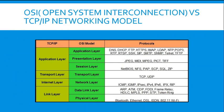OSI — Open System Interconnection — versus TCP/IP, which is Transmission Control Protocol / Internet Protocol networking model. OSI has seven layers, while TCP/IP has five or four: five for the TCP/IP reference model and four for the TCP/IP new model.